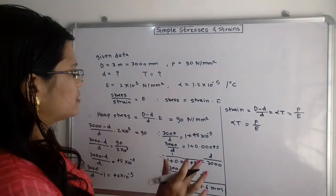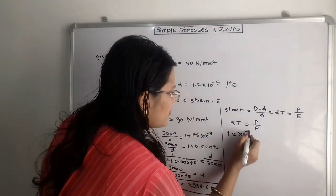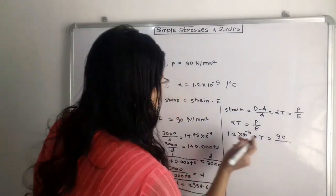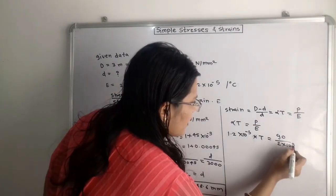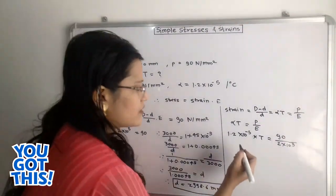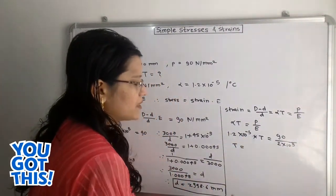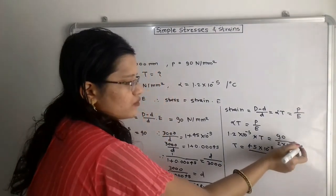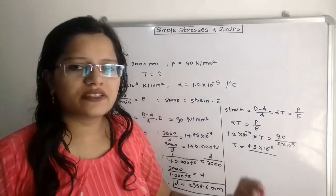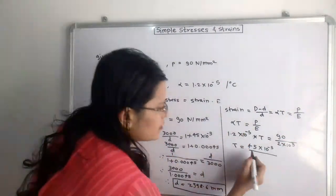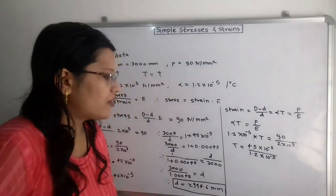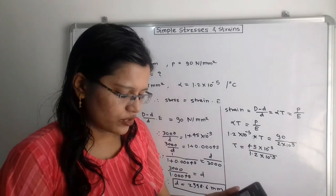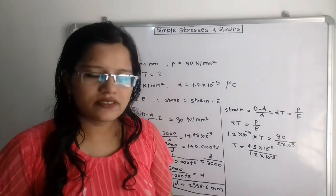Substituting values: alpha = 1.2 × 10⁻⁵, P = 90 N/mm², E = 2 × 10⁵ N/mm². So 1.2 × 10⁻⁵ × T = 90 / (2 × 10⁵) = 45 × 10⁻⁵. The 10⁻⁵ cancels from both sides, leaving T = 45 / 1.2. Using a calculator, T = 37.5.